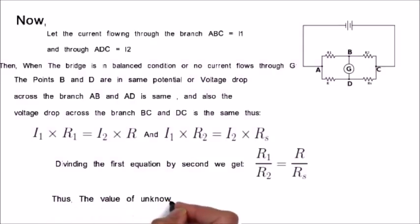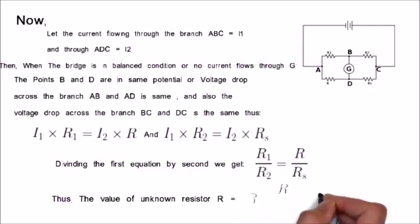Thus, the value of unknown resistor R is equal to R1 divided by R2 times RS.